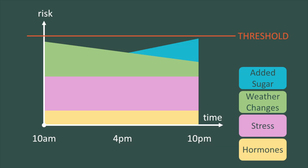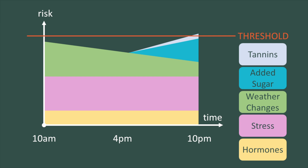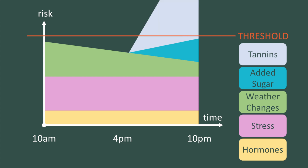Let's test our assumption on two extreme cases. Case A: I'm very close to the threshold before testing. On this graph, I'm exposed to hormones, weather changes, stress, and added sugar-related risks. Then I have tannin-rich food. My risk level was so close to the threshold before having tannins that I will quickly have symptoms regardless of my sensitivity to tannins — low, medium, or high. As a consequence, I cannot conclude on how sensitive I am.